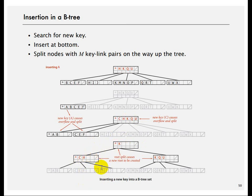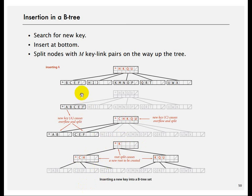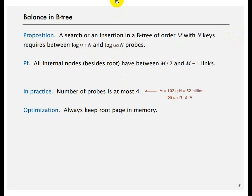Every time an insertion happens, you may potentially end up increasing the depth of the tree. Instead of two or three children, you can have on the order of m children. In general, a particular node holds between m/2 and m minus 1 keys, so the total height of the tree is on the order of log base (m−1) of n when all nodes are full, or log base (m/2) of n otherwise.